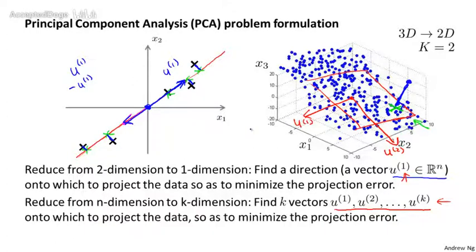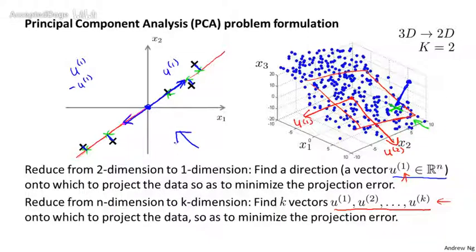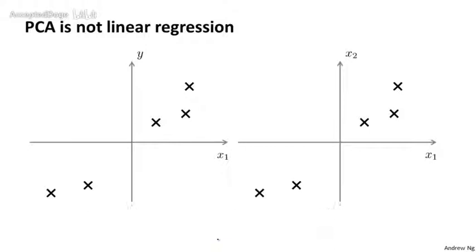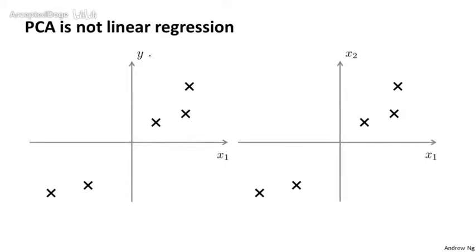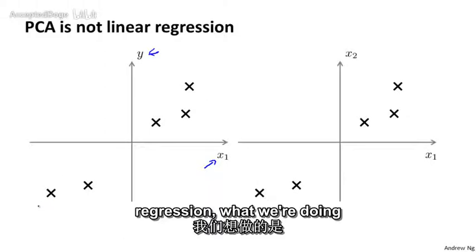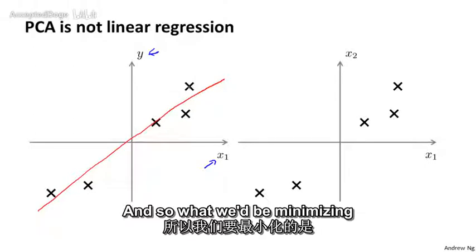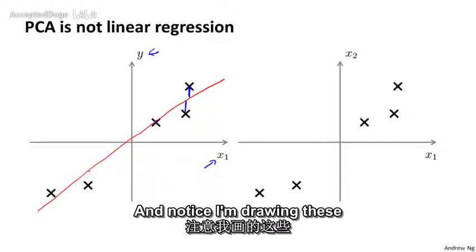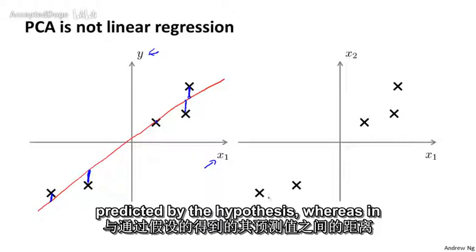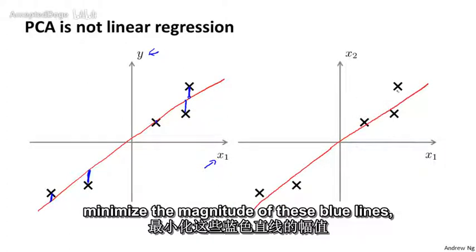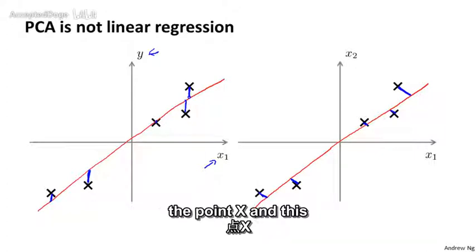One question I sometimes get asked is how does PCA relate to linear regression? Because when explaining PCA, I sometimes draw diagrams that look a little bit like linear regression. It turns out PCA is not linear regression — despite some cosmetic similarity, these are actually totally different algorithms. In linear regression, we're trying to predict the value of some variable y given input features x, fitting a straight line to minimize the squared error between a point and the line. Those blue lines are vertical distances. Whereas in PCA, it tries to minimize the magnitude of lines drawn at an angle — the shortest orthogonal distances between each point x and the red line.